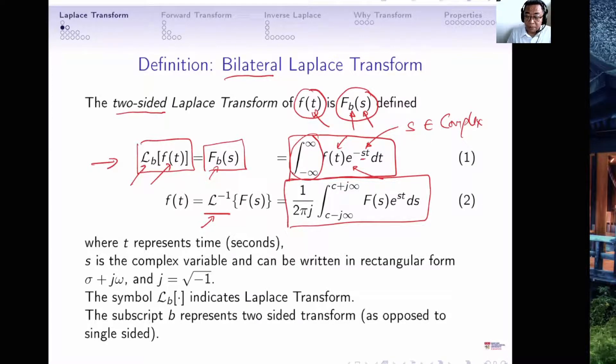This looks like a very complicated equation, we will not deal with this. Later on, you will see that we will use lookup table to mainly deal with inverse Laplace transform. But what happens in this inverse Laplace transform is this. It takes the representation in s, multiplied by e^(st). Notice the difference.